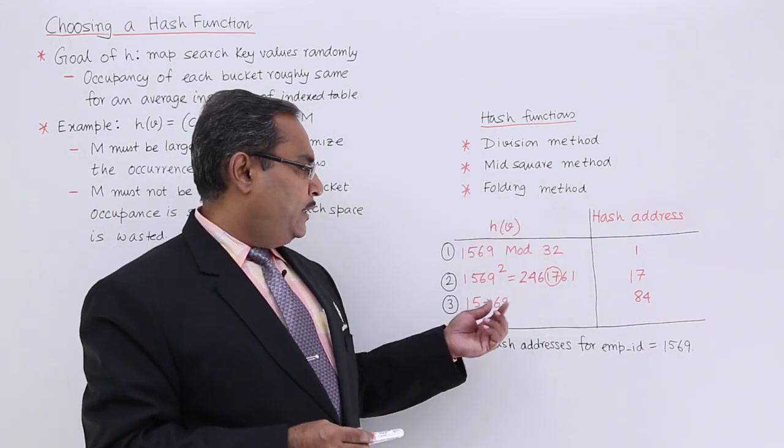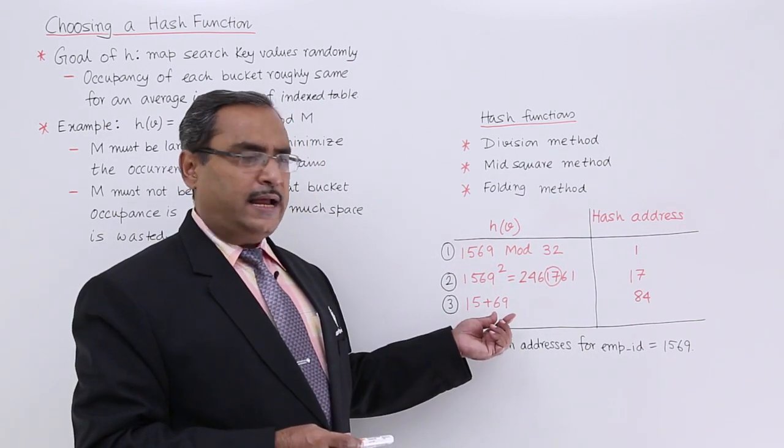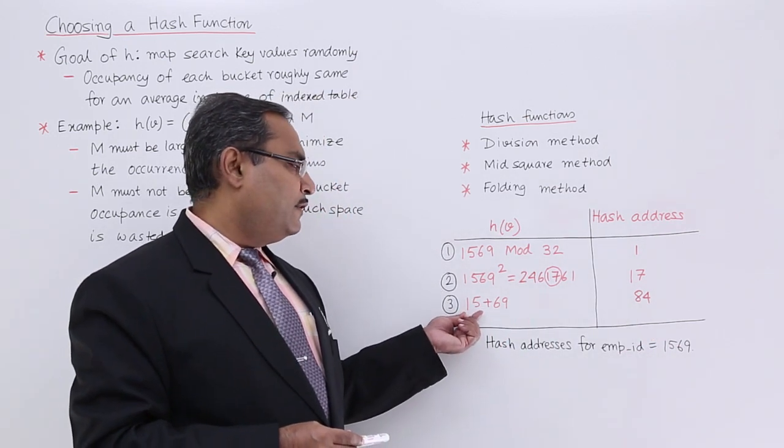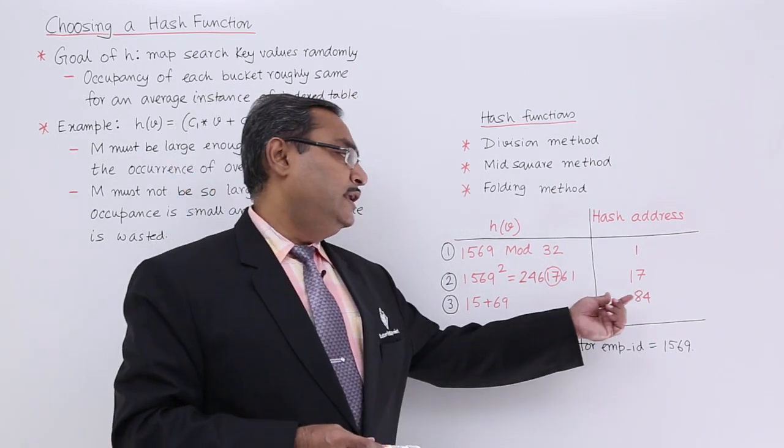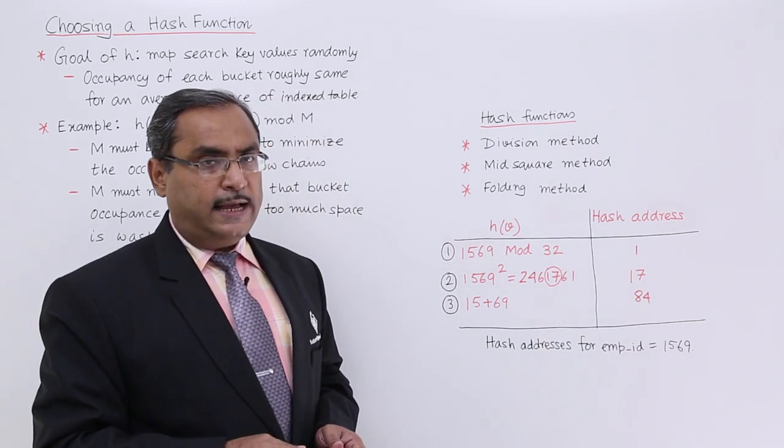Another one is the folding method. We can divide this number as 15 + 69, so this is the required hash address. Otherwise, I can also go for 15 + 96. The respective sum whatever is going to be obtained can be treated as a hash address.